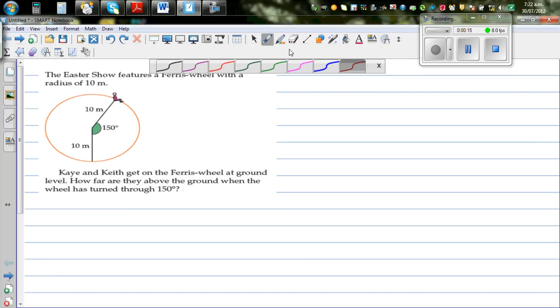Okay, what else is given? So one more information. Kay and Keith get on a Ferris wheel at ground level. So they're starting at ground level, and this is the ground level. Say they're going anti-clockwise, they're going this way.